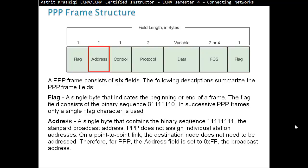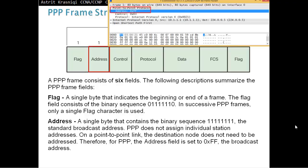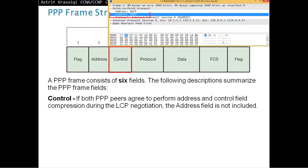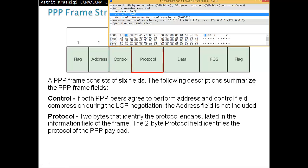The address, a single byte that contains the binary sequence of eight ones, the standard broadcast address. PPP does not assign individual station addresses. On a point-to-point link, the destination node does not need to be addressed. Therefore, for PPP, the address field is set to 0xff, the broadcast address. As you can see there from the Wireshark, we have a PPP address field of 0ff. Then we have a control. If both PPP peers agree to perform address and control field compression during the LCP negotiation, the address field is not included.